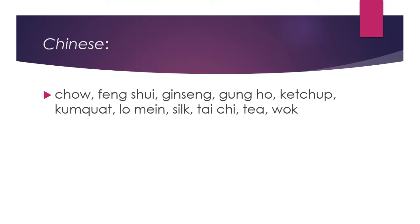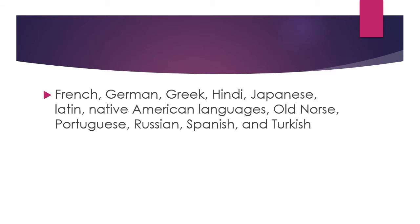From Chinese, we have the following words: chow, feng shui, ginseng, gung ho, ketchup, kumquat, lo mein, silk, tai chi, tea, and wok. And aside from those two, we also borrowed words from French, German, Greek, Hindi, Japanese, Latin, Native American languages, Old Norse, Portuguese, Russian, Spanish, and Turkish.